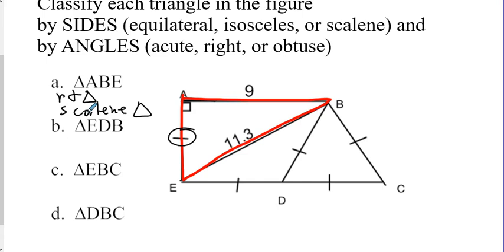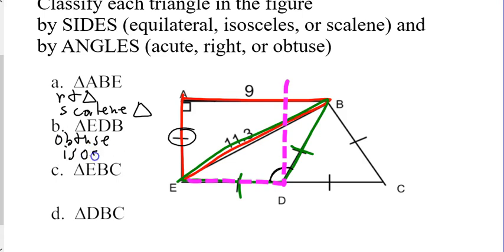Triangle EDB. Where's EDB? Now, notice with EDB it has these two marks here, which means two of the sides are the same. Also, if you look at this angle here, this is clearly bigger than 90. That makes it an obtuse triangle. So, it's an obtuse isosceles triangle.